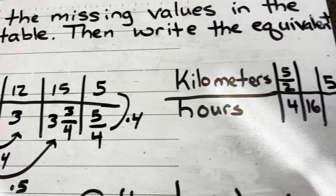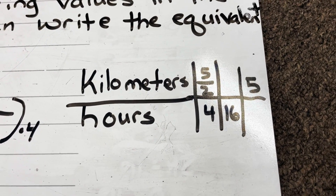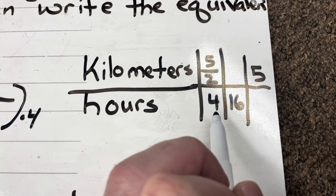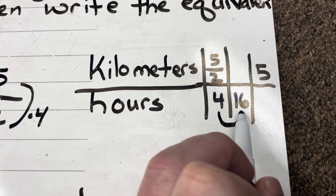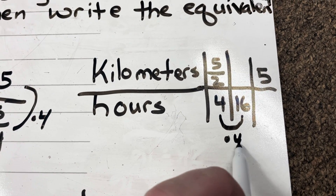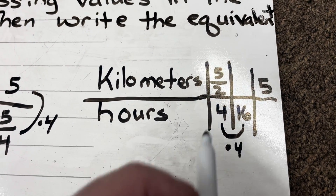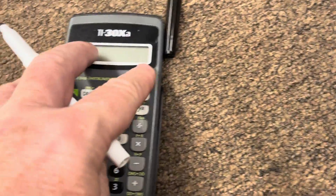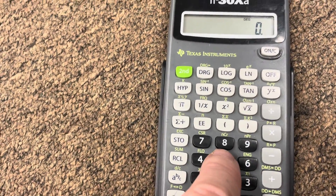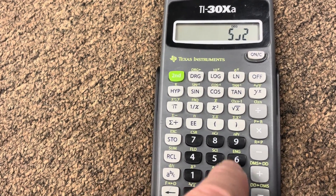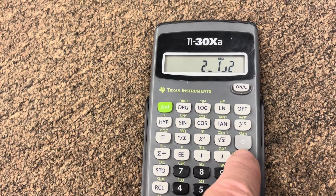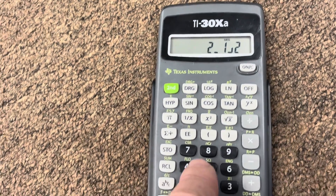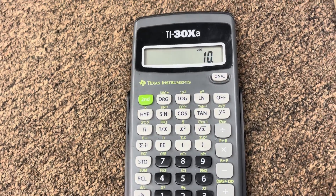Now let's look at the second example: kilometers and hours. The rate is 5/2 kilometers per 4 hours. I can see that 4 hours became 16 hours, so I multiplied by 4. That means I have to do 5/2 times 4 consistently. On the calculator: 5 over 2 times 4...